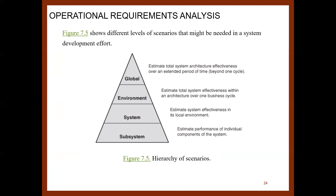In the hierarchy of scenarios, there are different levels that might be needed in a system development effort. At the global level, scenarios estimate total system architecture of effectiveness over an extended period of time. For example, thinking about the Hubble telescope case study, the total system architecture would involve testing the entire telescope and measuring its performance. At the second level, the environment estimates total system effectiveness within an architecture over one business cycle.